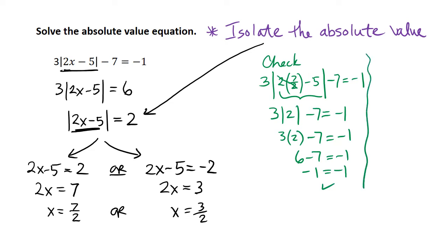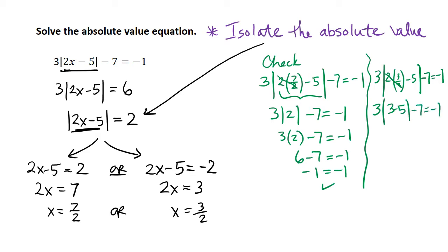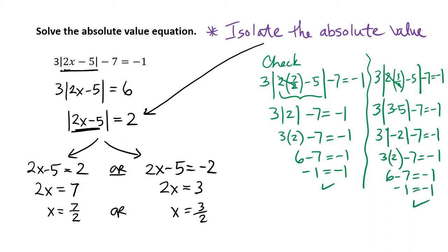For our second solution, we use x equals 3 halves. We compute 3 times the absolute value of 2 times 3 halves minus 5, close absolute value, minus 7, equals negative 1. The 2s cancel, giving 3 minus 5 inside the absolute value. That's negative 2, and the absolute value of negative 2 is positive 2. So we get 3 times 2 minus 7, which is 6 minus 7, equals negative 1. Negative 1 equals negative 1.